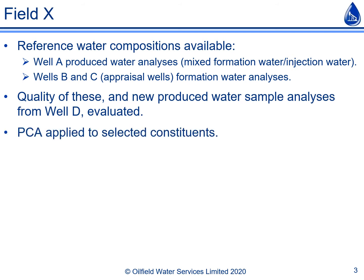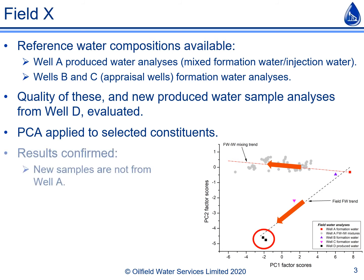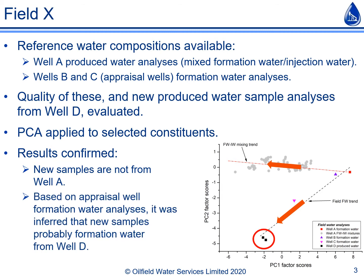Principal component analysis is a multivariate regression method which is useful for identifying waters with different compositions. The figure on the right shows the PCA regression results expressed as factor scores for principal components 1 and 2. These results show a clear trend for well A produced water analyses, showing that the produced water compositions vary with the fraction of formation water and injection water in the sample. There is also a separate clear trend for formation water analyses from the field, showing that the composition of the formation water varies across the reservoir. The position of the well D samples on this figure suggests that they are not well A produced water, and that they are likely to be just formation water from well D.